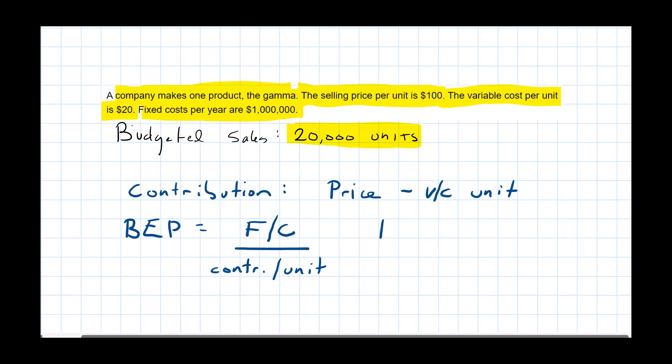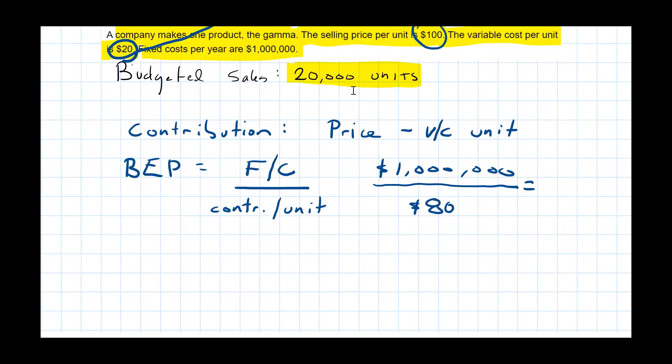Let's do it together. So we see the fixed costs are a million dollars. We see our contribution per unit. $100 minus $20 is $80 per unit. And that would be equal to 12,500 units.